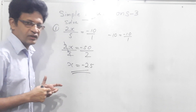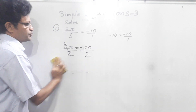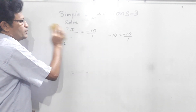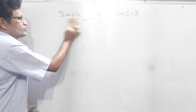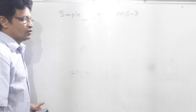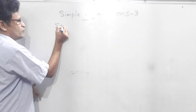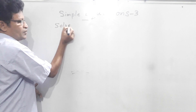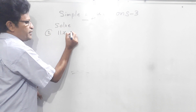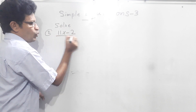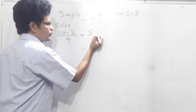Okay, right. Now we will do the second question. Second question is: 11x minus 2 over 4 equals 5. Solve.